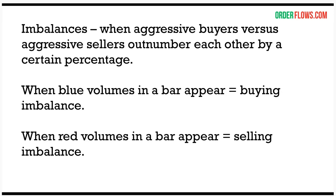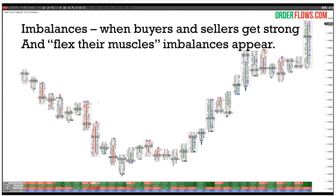When buying imbalances appear you'll see blue numbers on the footprint chart; for selling imbalances you'll see red numbers. You can see each bar has volume at price on the bid side and offer side. Red numbers are selling imbalances; blue numbers are buying imbalances. As the market comes down you're seeing pretty much every bar with selling imbalances. The market hits the bottom, goes sideways with mixed signals, then you start seeing bars with buying imbalances as the market starts making its way up.